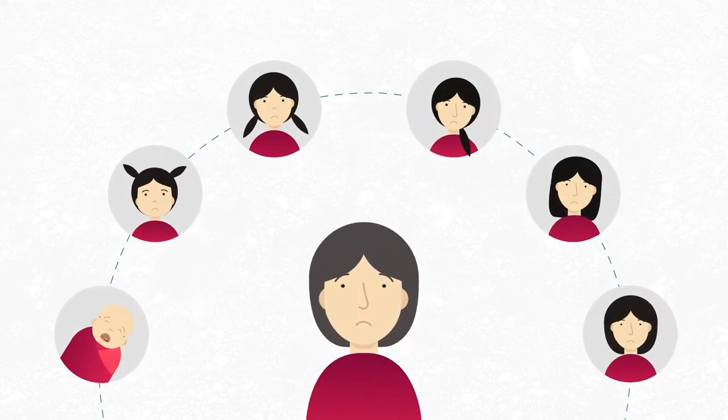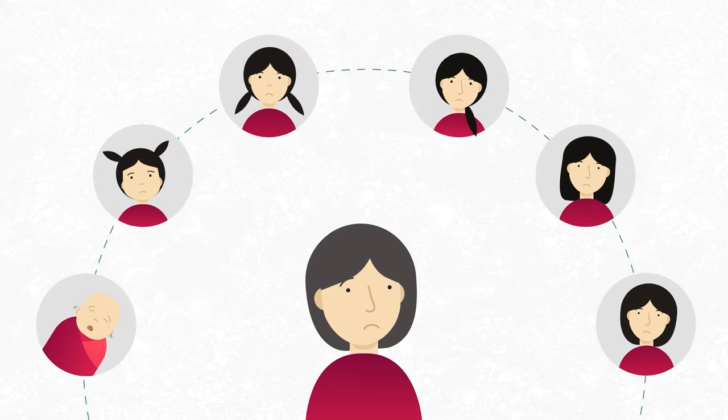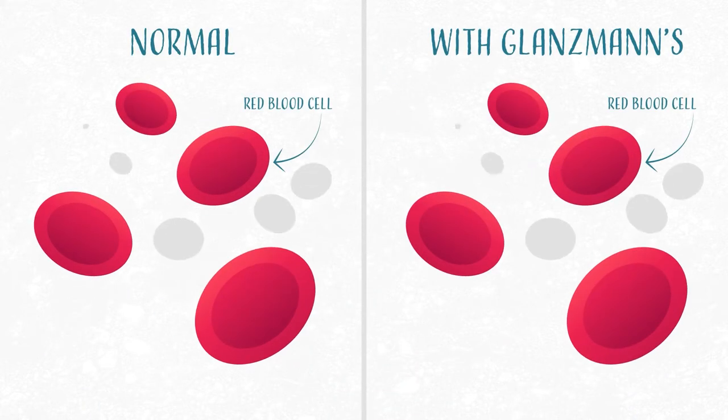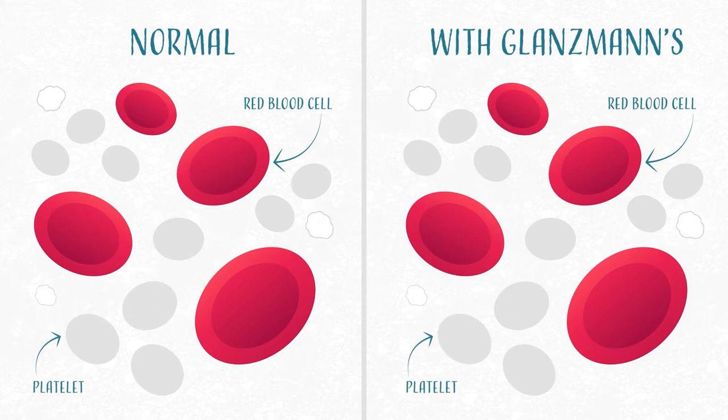All of her life, Anna has coped with bleeding problems that have made her feel very unwell. She has a rare inherited bleeding disorder called Glanzmann's thrombosthenia, where the platelets in her blood don't stick together and it doesn't clot properly.